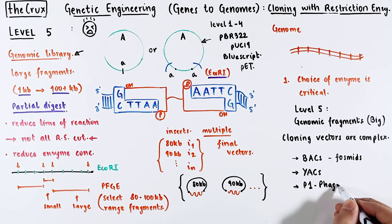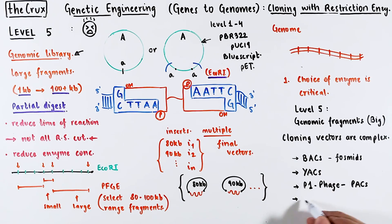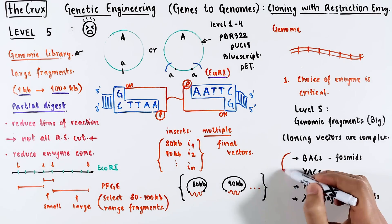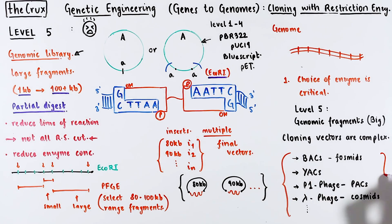In levels 1 to 4, the vector is generally a pBR322-based vector like pUC19, BlueScript, or maybe some expression vector. Level 5 deals with big genomic fragments and needs special cloning vectors. You may have heard of BACs, YACs, Fosmids, PACs, Cosmids, and many more. There are videos on these different vectors — both simple and complex ones — in the genetic engineering playlist linked below.